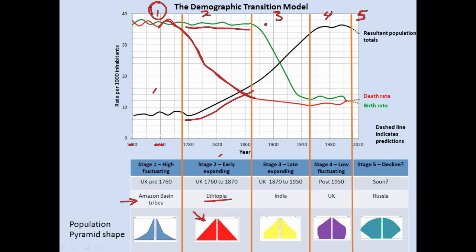In stage three, things start to shift quite a bit. The death rate is starting to stabilize, and culture has caught up — people realize they don't need to have so many kids to replace ones that have passed away. Cost of living is probably going up, so having more kids is expensive. People are working and have access to education. For all of these reasons, birth rates fall off dramatically. The country is still growing quite a lot, but more slowly. An example of this would be India, a country rapidly moving toward being modern but where large parts are still in this transition.